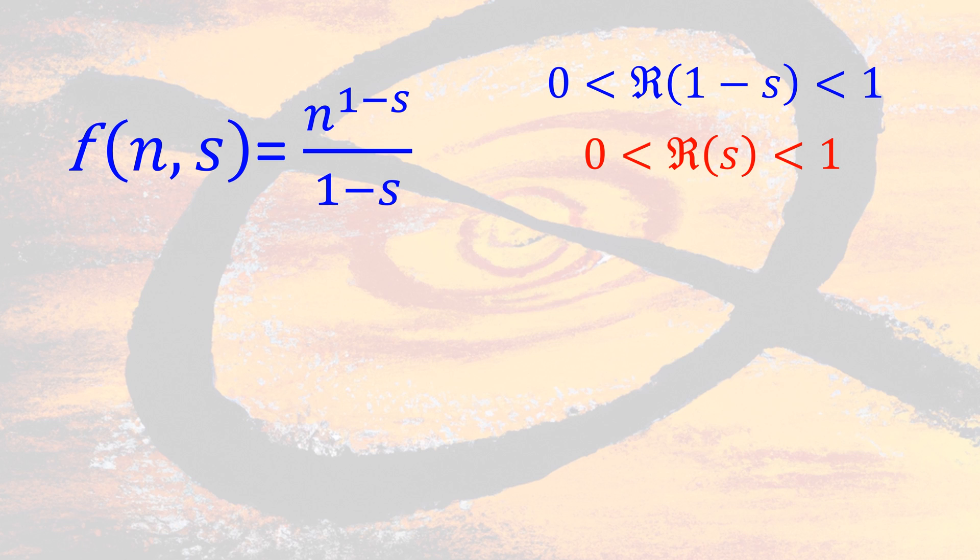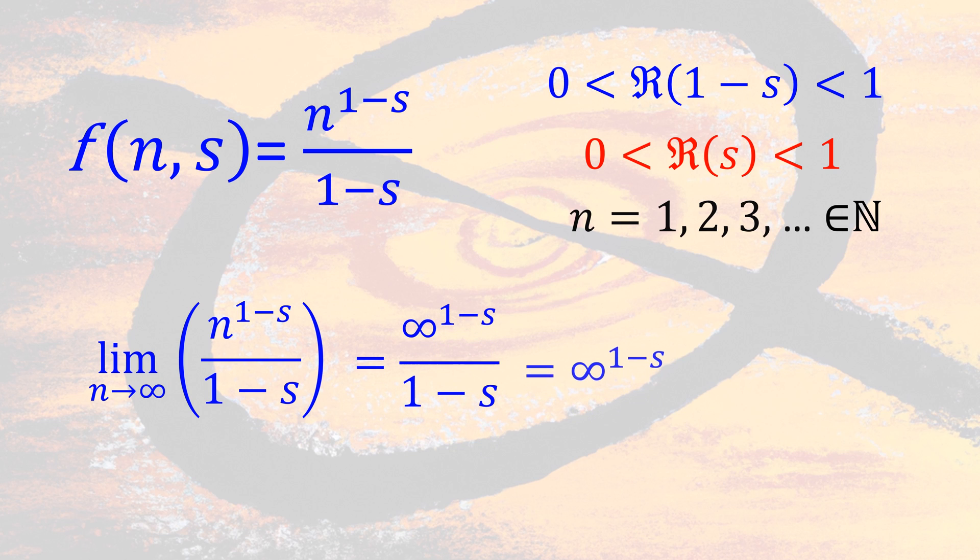s is a complex number with a real part of 1 minus s, or s between 0 and 1. And n can be any natural number. Please note that the limit of n to infinity of this function is equal to infinity as you can see.